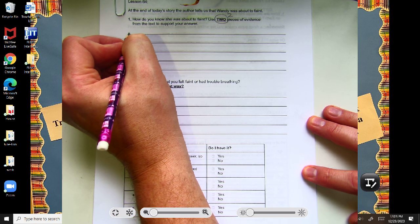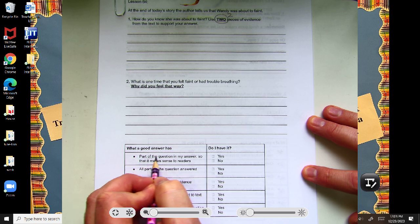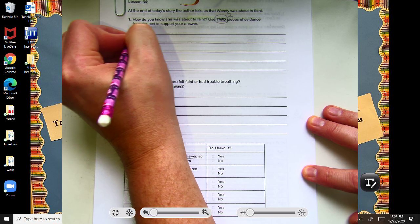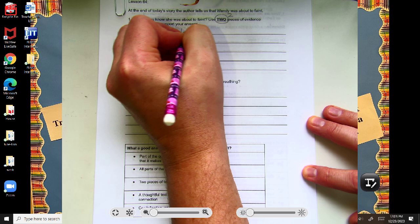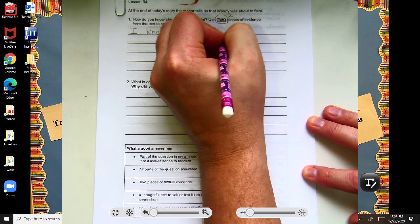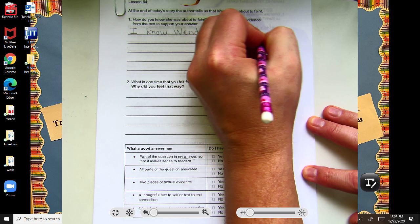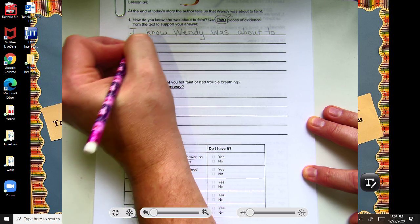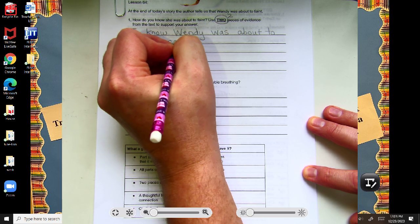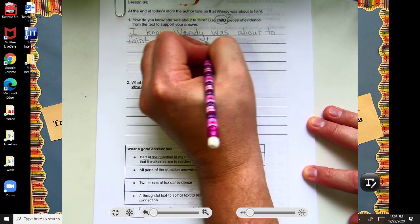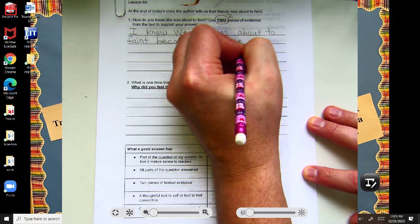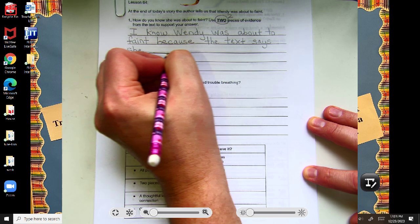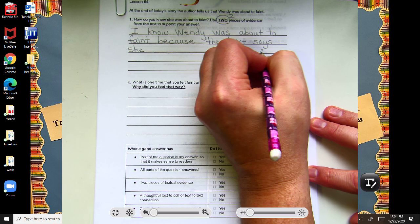All right, so again, scholars, I'm looking down here. We want to use part of the question in the answer. I know Wendy was about to faint because, oh, there's my favorite word, because, the text says she...